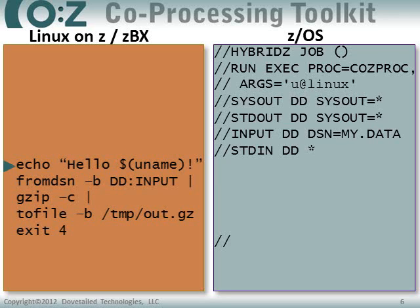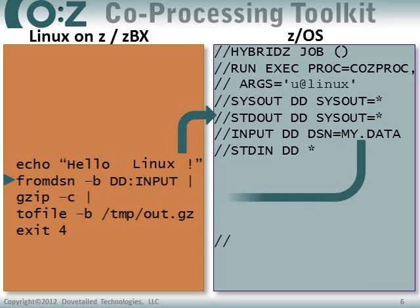The first line of the program is an echo, which is a Unix shell script command for writing a string to standard out. Before writing that string, we do a command substitution to get the name of the operating system we're running on. We see that we are actually running on Linux, not on ZOS. Echo writes its output to standard out, which has been redirected to the Standard Out DD, so it shows up not on the remote system but back in our spool file on ZOS. The next line of the shell script uses the from DSN dataset pipes command to read data from the input DD my.data. It streams the data — this from DSN command reaches back to ZOS and streams that data down to our remote system.